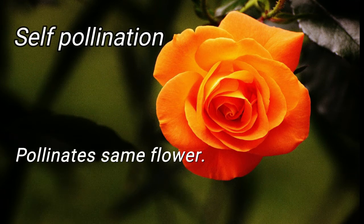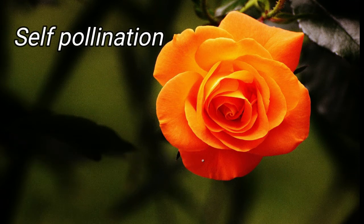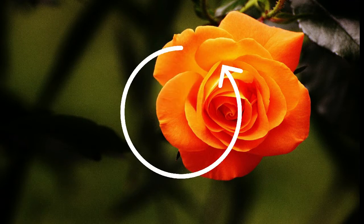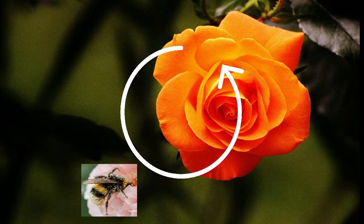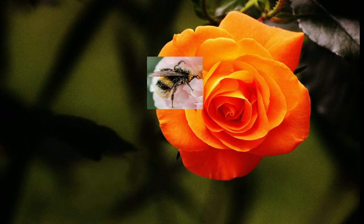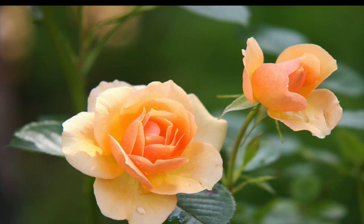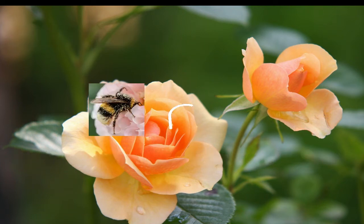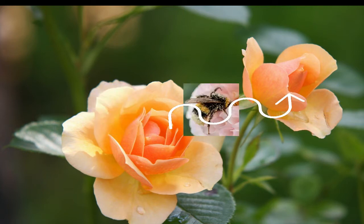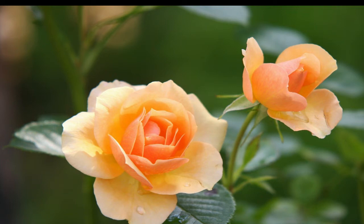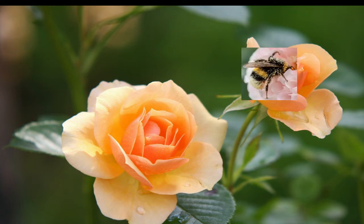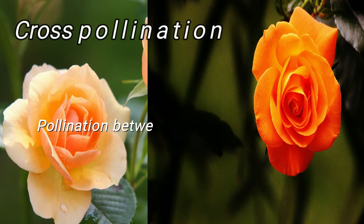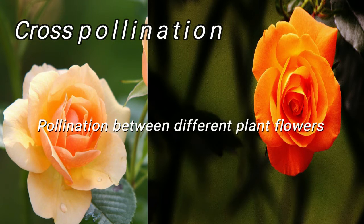Self-pollination is a type of pollination where pollination occurs in the same plant or the same flower itself. Now look at the bee — it moves around and comes back to the same flower, meaning pollination occurs within the same plant. Self-pollination can also mean that flowers of the same plant are pollinated, where a bee moves from one flower to another flower of the same plant. So essentially it is self-pollination.